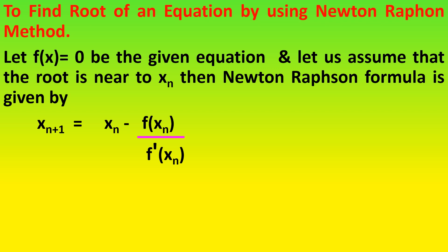Here, the value of n equals 0, 1, 2, etc. For the first iteration, the value of n will be 0. For the second iteration, the value of n will be 1. Like that, based on which iteration we are going to do, the value of n will be changing.